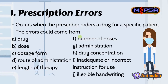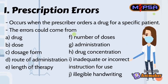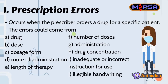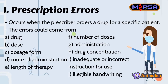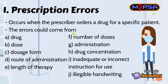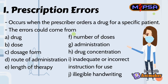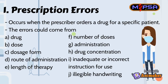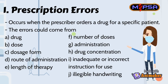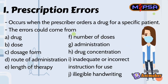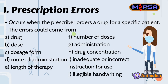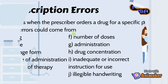First, prescription errors occur when the prescriber orders a drug for a specific patient. The errors could come from the drug, dose, dosage form, route of administration, length of therapy, number of doses, administration, drug concentration, inadequate or incorrect instructions for use, and illegible handwriting of the prescriber.